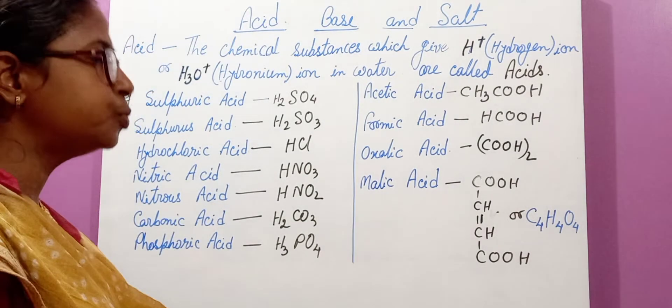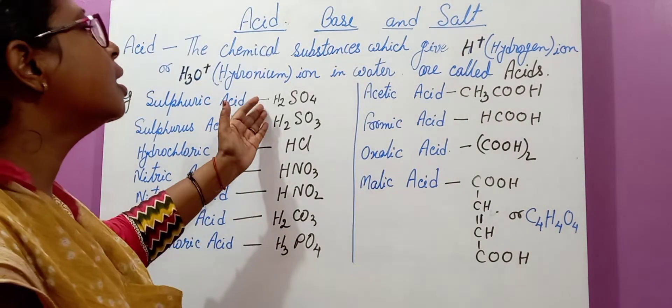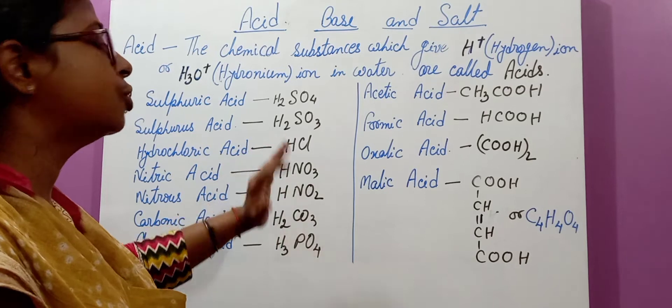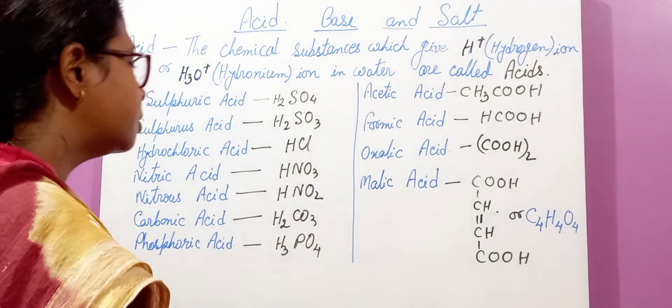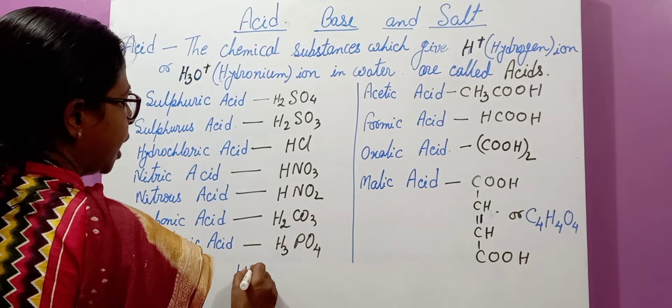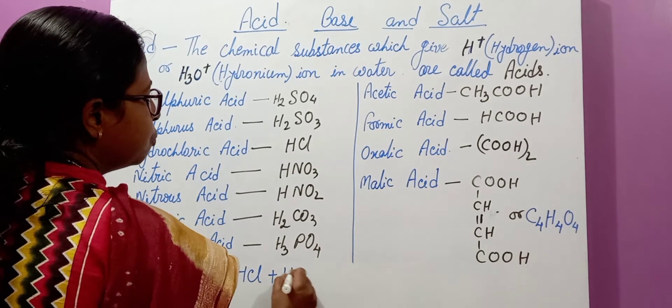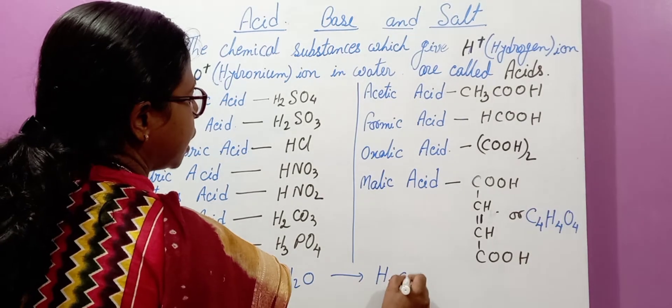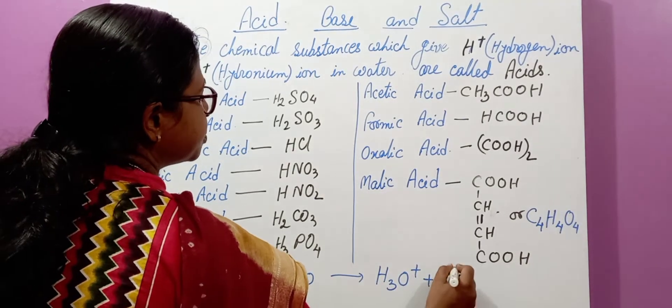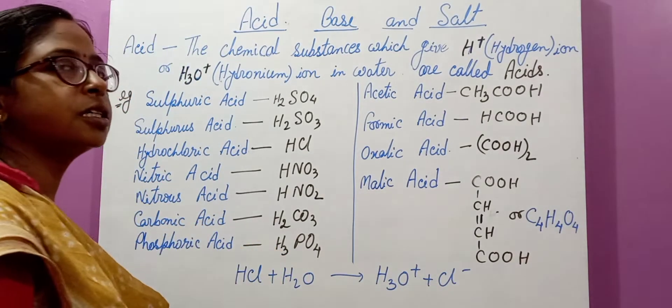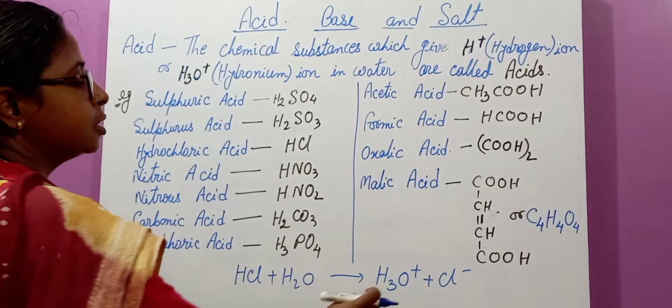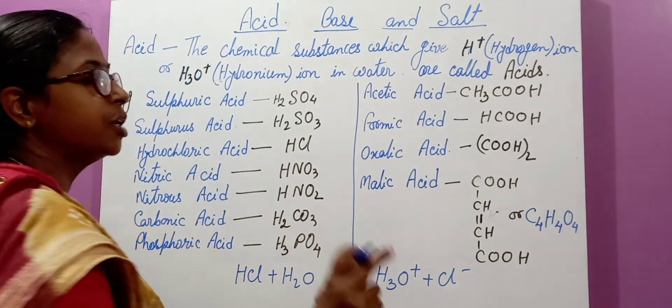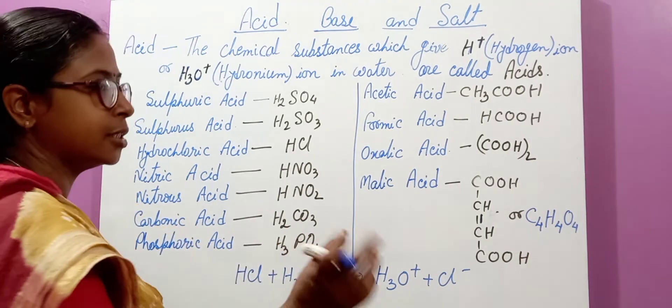So children, how will you prove this sulfuric acid or hydrochloric acid is acid? Suppose when you are dissolving hydrochloric acid in water, what it gives? It gives H3O+ ion and chloride ion. It means it proves that this gives the hydronium ion. It means this hydrochloric acid is an acid.